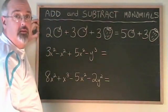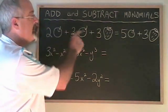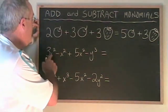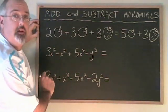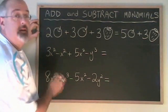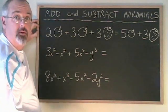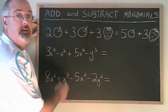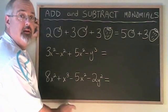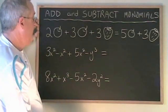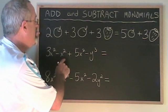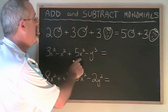This is what we do in polynomials, but usually instead of pictures of apples and strawberries we have variables and exponents. We have to know that x squared is not similar to x cubed, and x squared is not similar to y squared — they are as different as apples and strawberries. In this example we have three x squared minus x squared plus five x squared minus y cubed.